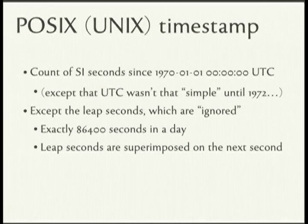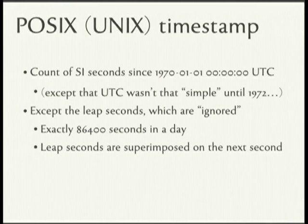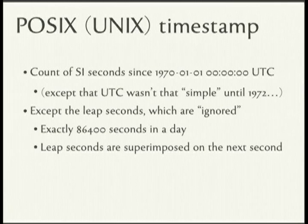Another interesting timescale for programmers are POSIX timestamps — most people call them Unix timestamps, but they were not standardized by Unix; they were actually standardized in POSIX. That is the count of SI seconds since January 1st, 1970, the epoch. There are exactly 86,400 seconds per day, so you can say you want something to happen at noon five years from now and know exactly how many POSIX seconds will have elapsed.